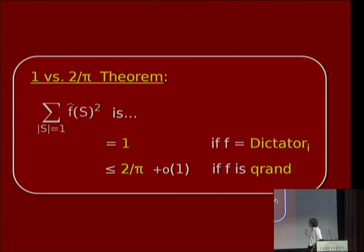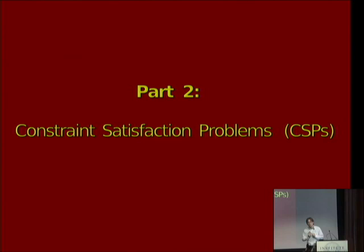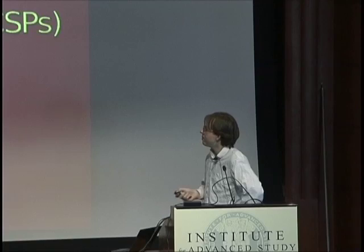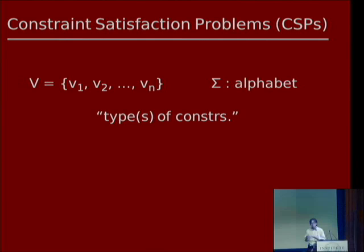Now I want to take a big detour that'll look completely unrelated, to discuss constraint satisfaction problems — CSPs. We're in computational complexity now; this is an algorithms problem or a class of algorithm problems. A CSP has three ingredients: a set of variables v_1 through v_n, an alphabet sigma (a finite set, mostly of cardinality 2 in this talk), and the goal is to assign a value from the alphabet to each variable subject to certain types of constraints.